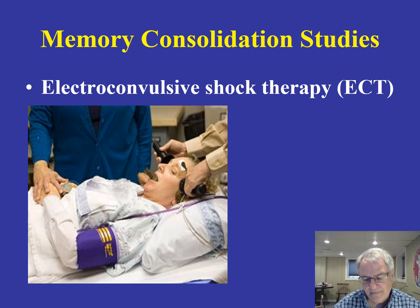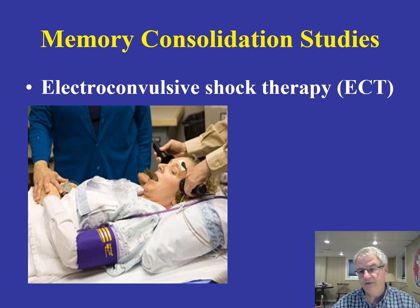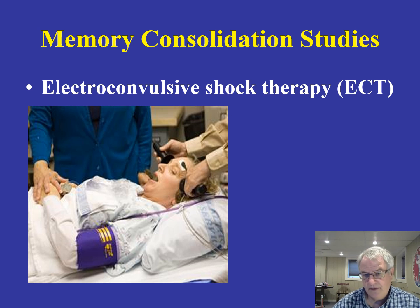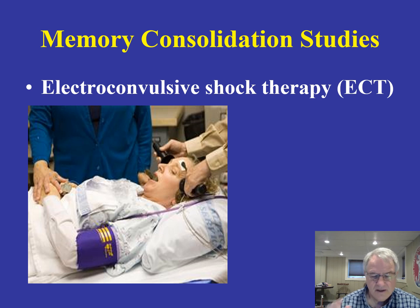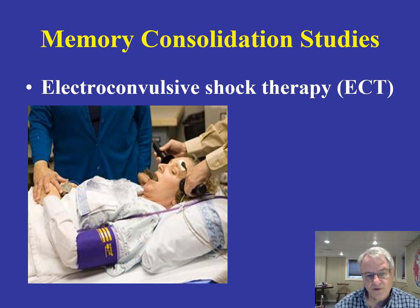We also have cases where electroconvulsive shock therapy is used to treat individuals with very severe clinical depression. Electroconvulsive shock therapy results in the obliteration of memory for events leading up to the shock — maybe a half hour to an hour beforehand. But their long-term memory is fine: they know who they are, they know their friends, their telephone numbers, where they live. Those kinds of memories have not been impaired, providing more support for the idea that we have separate short-term and long-term memory systems.